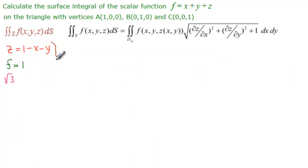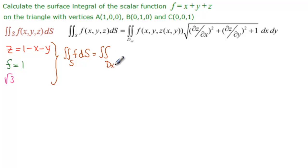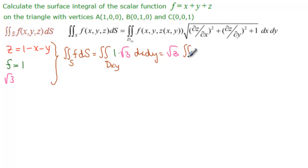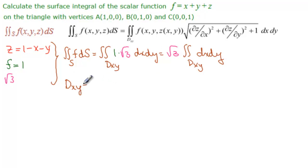We are calculating the double integral over S of f dS. Using our formula, it becomes a double integral over D_{xy} — the projection of S onto the XY plane — where f equals 1 and the square root equals √3, giving us √3 times the double integral over D_{xy} of dA.